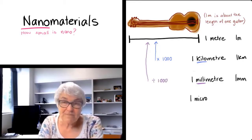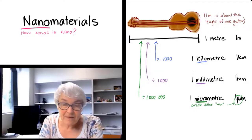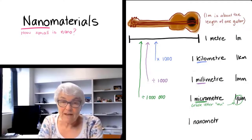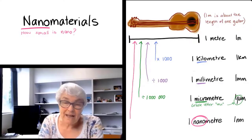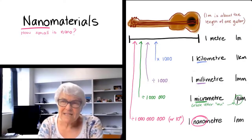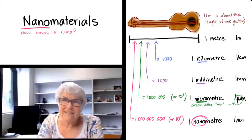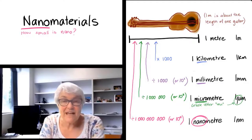And then if we talked about a micrometer, we'd be talking about dividing by a million. And then if we talk about a nanometer, we're talking about dividing by a thousand million or by ten to the nine. So we divide a meter by ten to the nine and that gives us a nanometer.